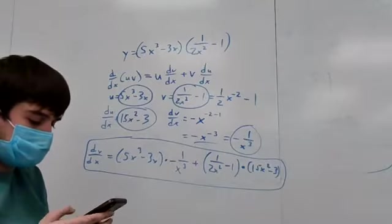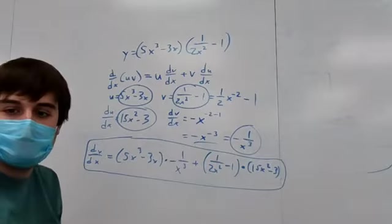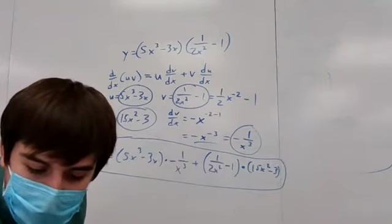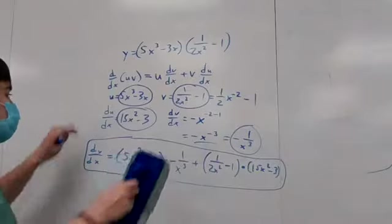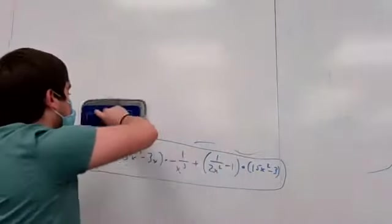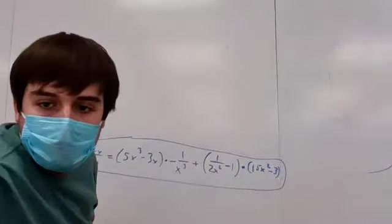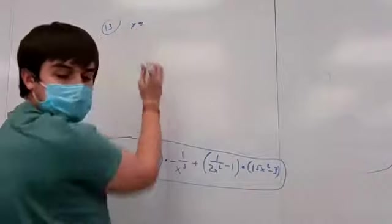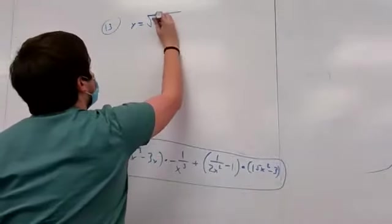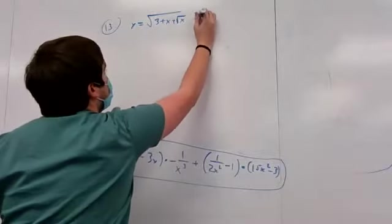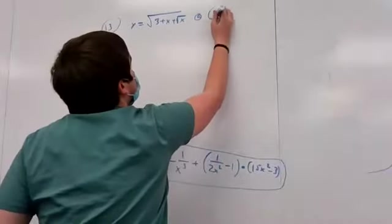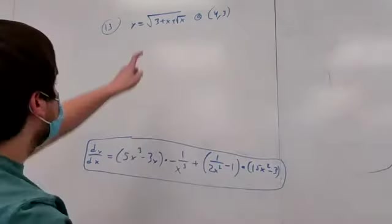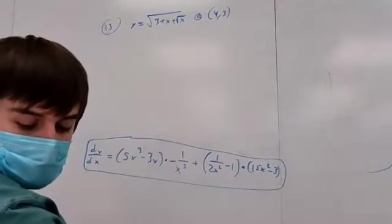Number thirteen: find the equation of the tangent line to the curve y = √(3+x) + √x. Just like problem nine, we need a tangent line, so we need a slope and a point.